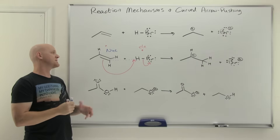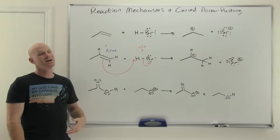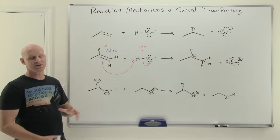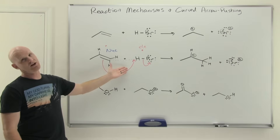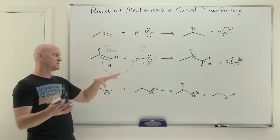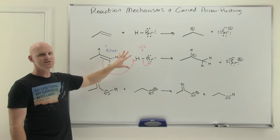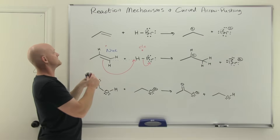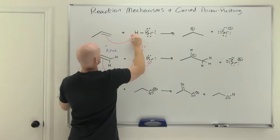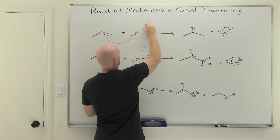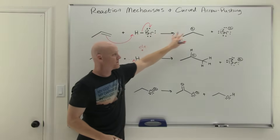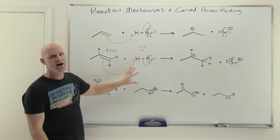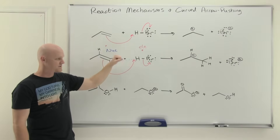Going back to the original drawing without all the hydrogens: we make a bond between this carbon and the hydrogen, and since hydrogen can only have one bond, the old one has to break. That's the arrow pushing. You'll get more and more comfortable with this as we go and as we start doing these mechanisms in coming chapters — without having to draw all the hydrogens in. But if it helps early on, definitely draw them in.